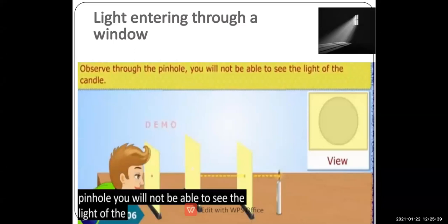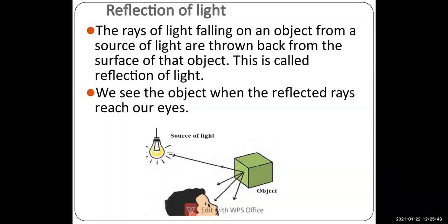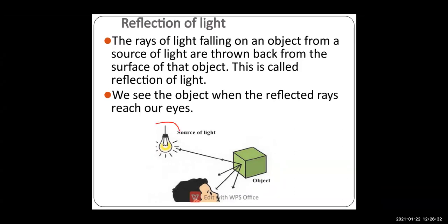Now, reflection of light — how do we see objects? We see objects due to the source of light. Rays of light fall on an object, and from that object the light is reflected back. This is called reflection of light. When the reflected rays from the object reach our eyes, we can see the object clearly.